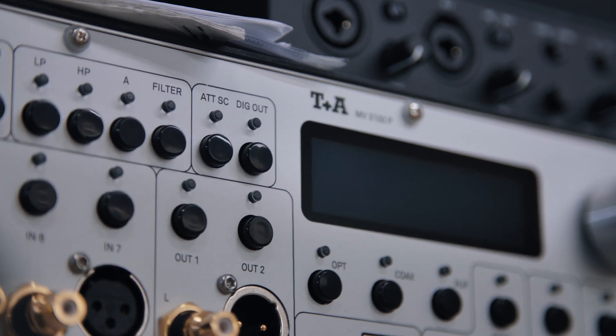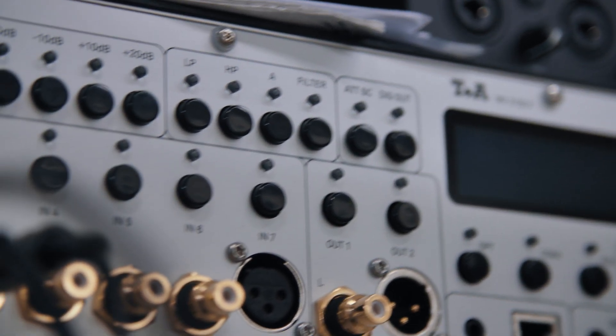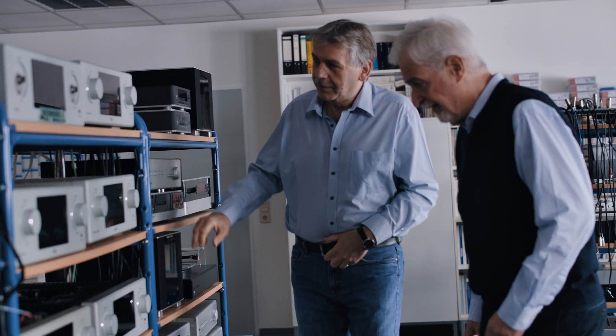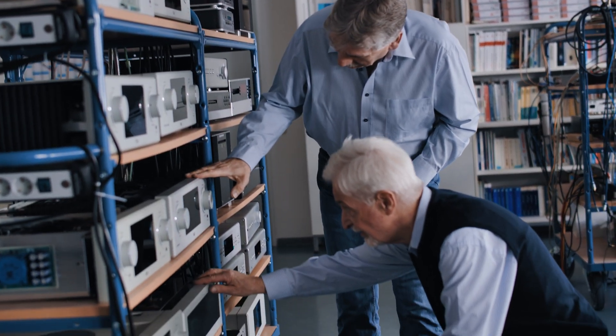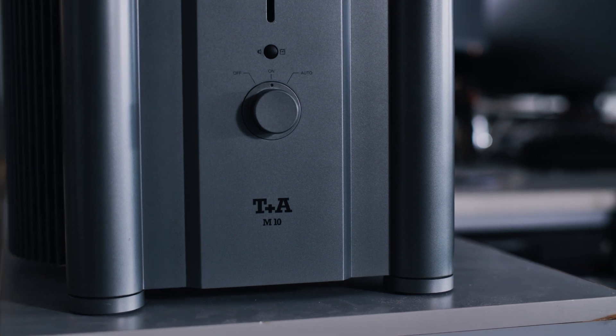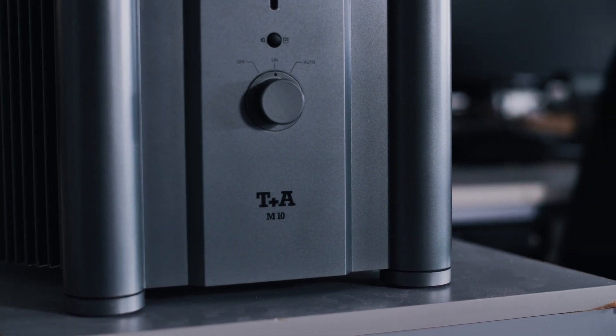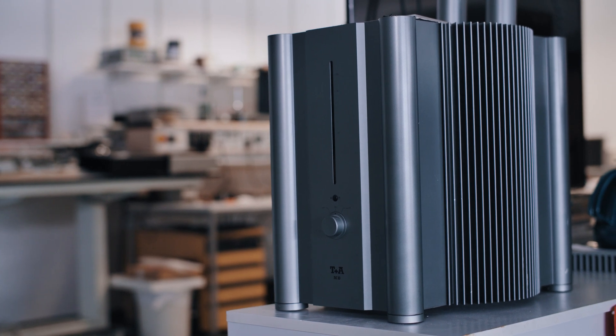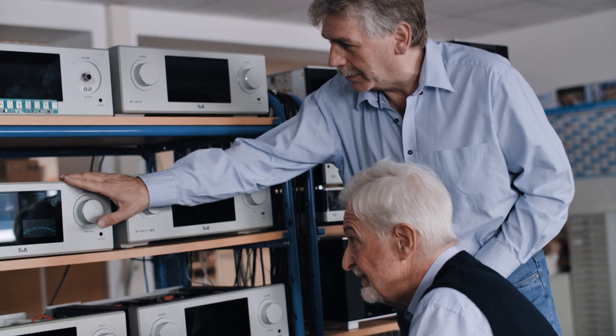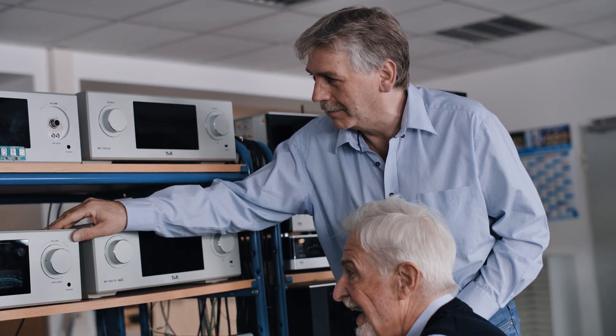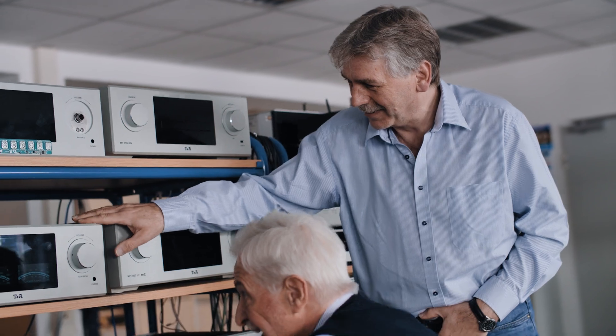This transition to HV technology took place around the year 2010. We made our first HV designs based on an amplifier from the foregoing V series. The V series was a pure tube amplifier series. We transferred the circuits of the then M10 amplifier to HV technology and we produced the PA3000HV, which was the first device in the HV series, followed by the MP3000 as a source.